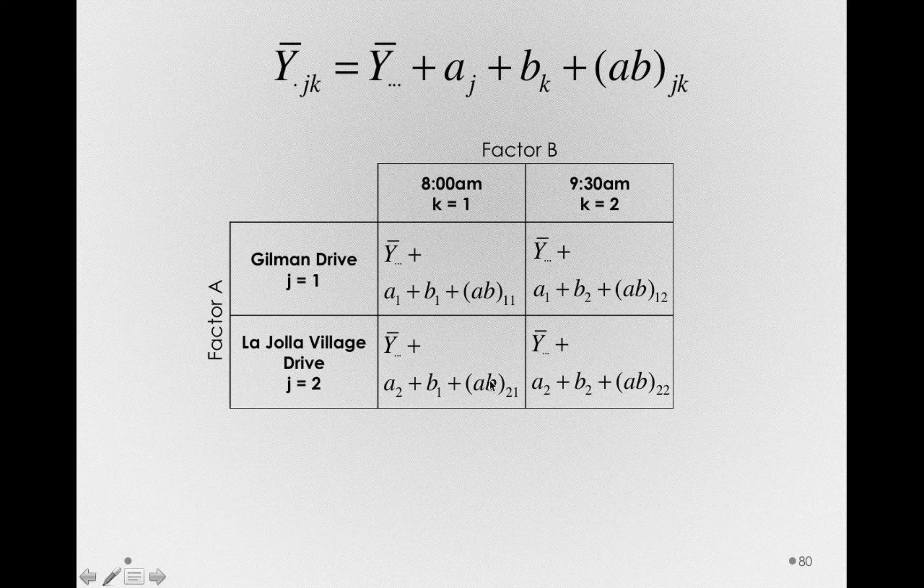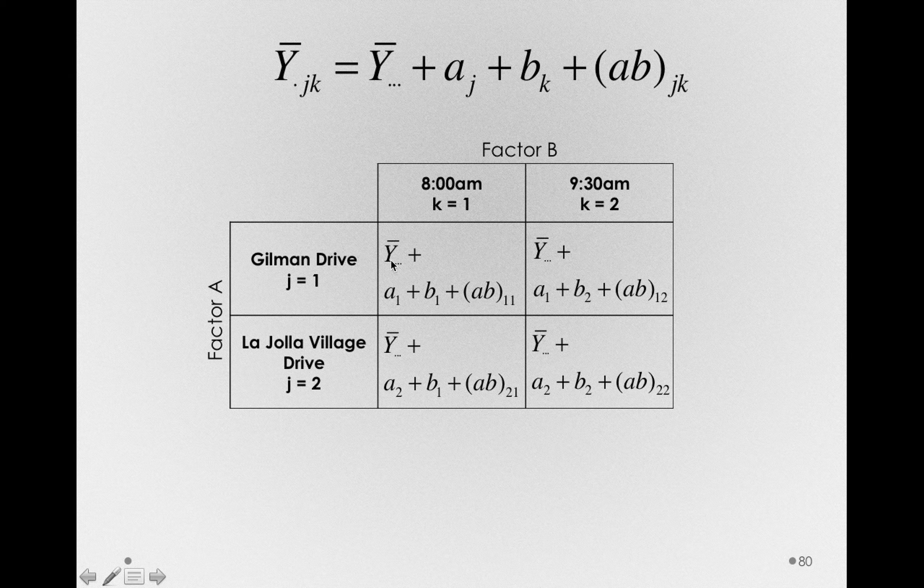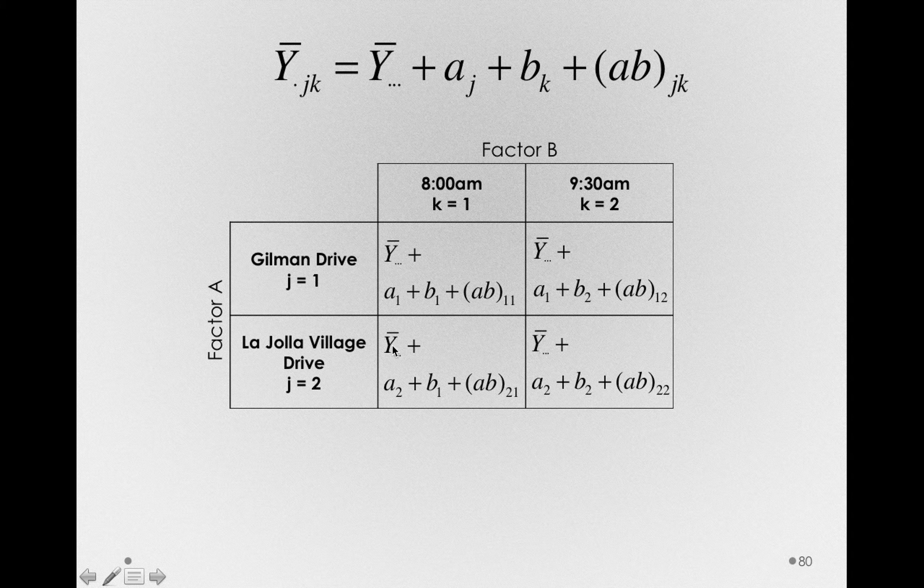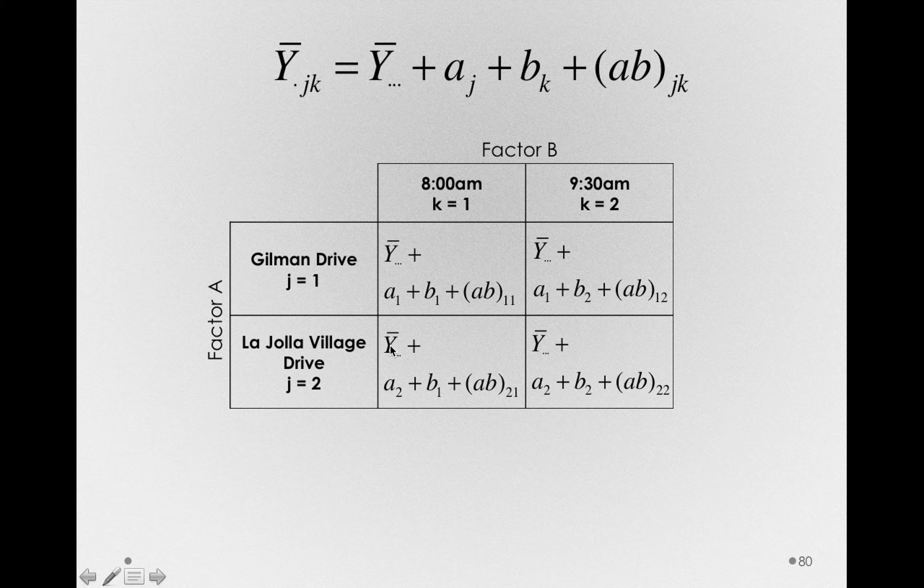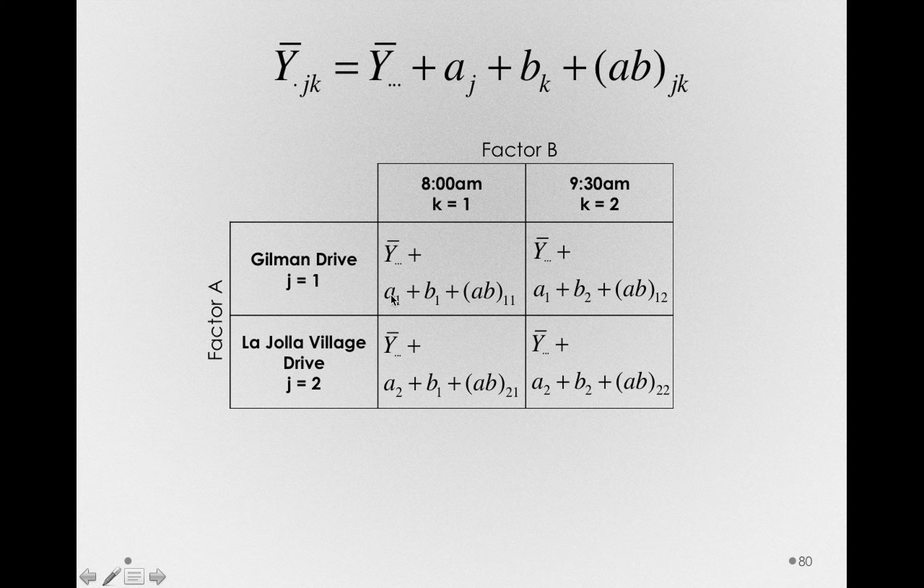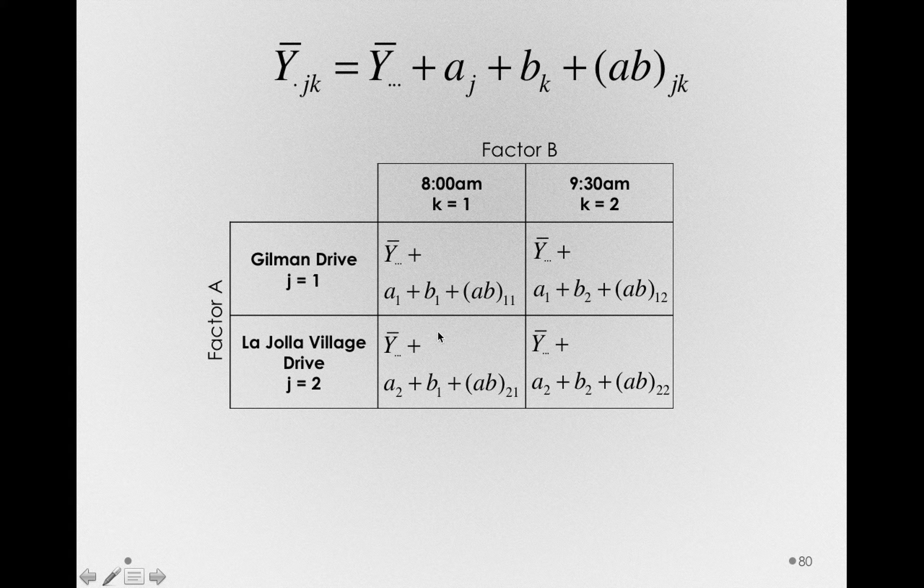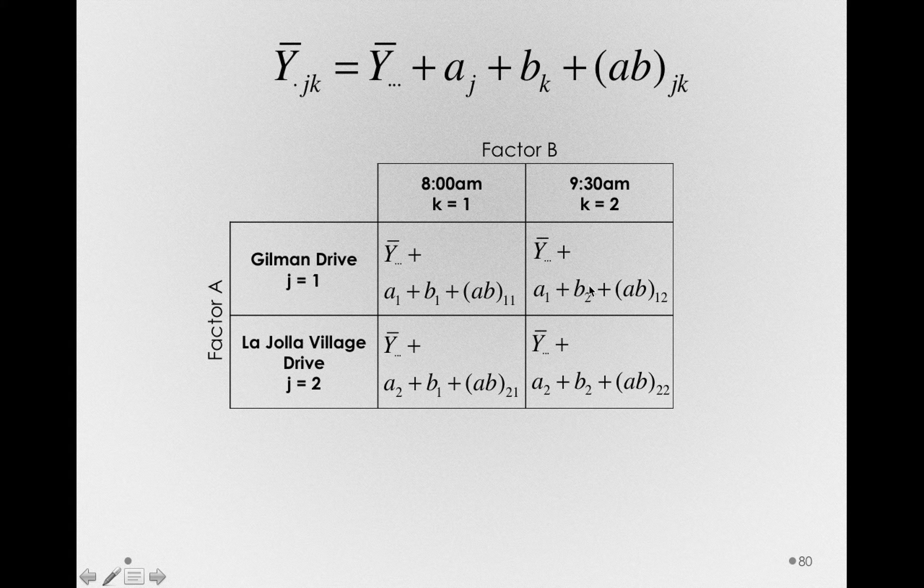Notice how many values we're going to have to find. We're going to have to find the grand mean, and that grand mean is shared in all of our cells, so we only have to find one value there. We're going to have to find two values of A, A1 and A2, and we're going to have to find two values of B, B1 and B2.